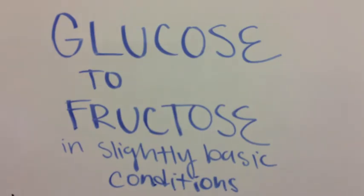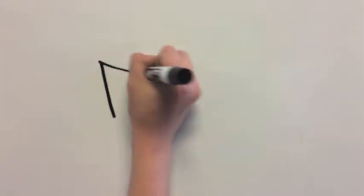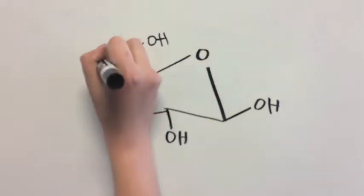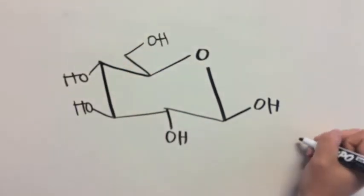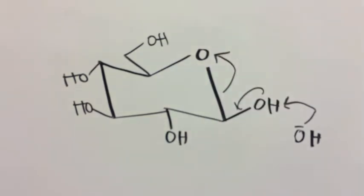The first step in this process is to break the ring open. We are under slightly basic conditions, and a base, in this case OH-, will deprotonate the alcohol group attached to the anomeric carbon, bouncing the electrons in that bond down to form an aldehyde. And then those electrons will move on to the O, giving us a negative charge on that oxygen.